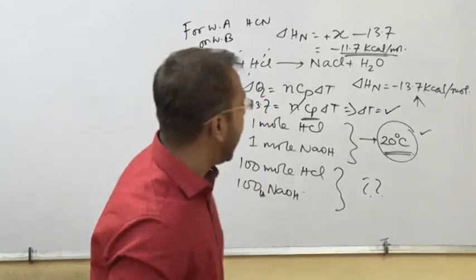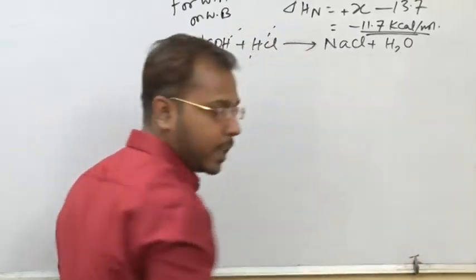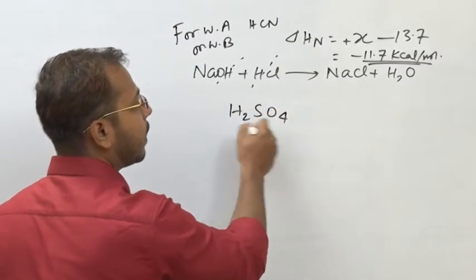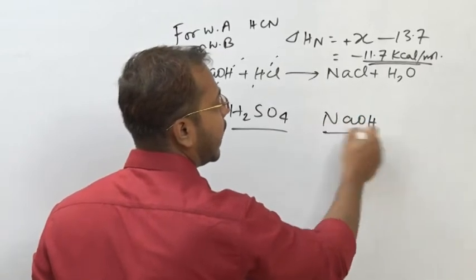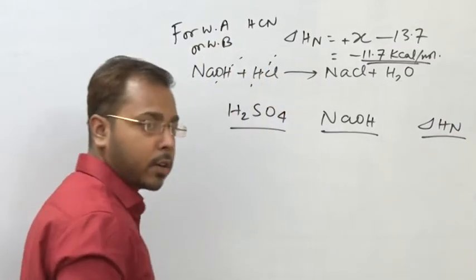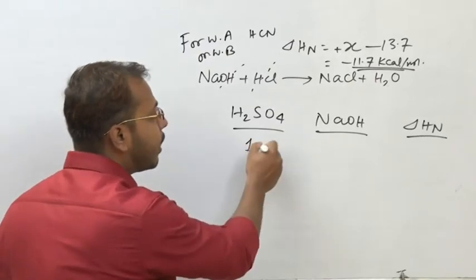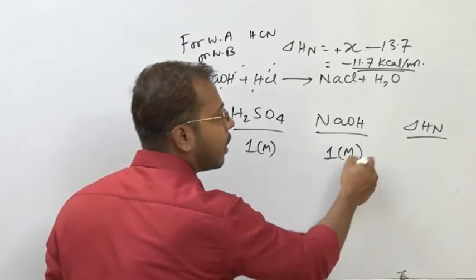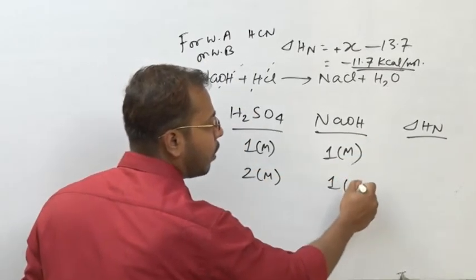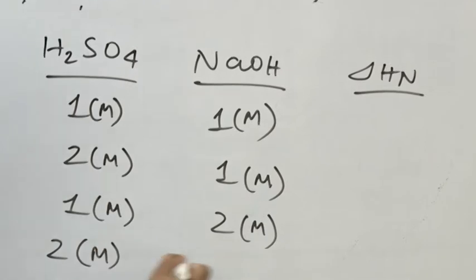Now let's consider the case of H₂SO₄ and NaOH. We'll build a chart with different molar combinations: 1 mol H₂SO₄ with 1 mol NaOH, 2 mol H₂SO₄ with 1 mol NaOH, 1 mol H₂SO₄ with 2 mol NaOH, and 2 mol H₂SO₄ with 2 mol NaOH. These questions are very important for competitive exams.